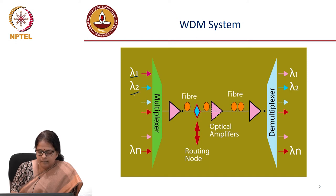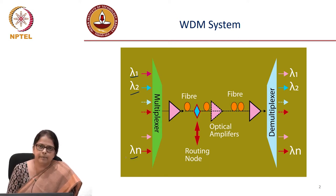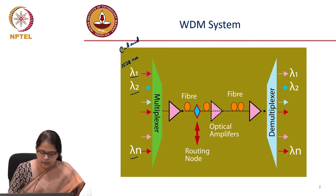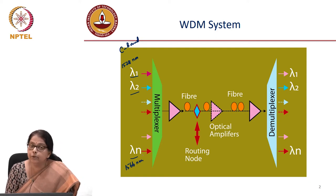You will combine all these wavelengths using a device capable of combining all wavelengths, which in the C-band vary from about 1528 nanometers to about 1566 nanometers. Of course, a WDM coupler will not do this job.